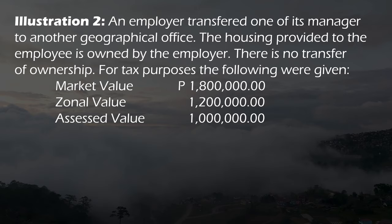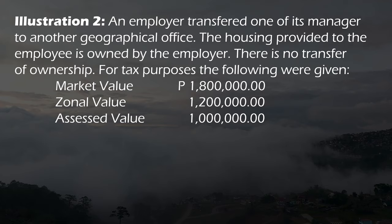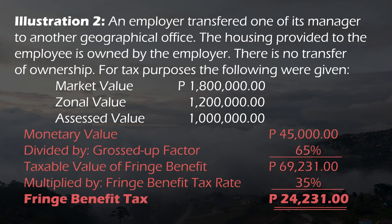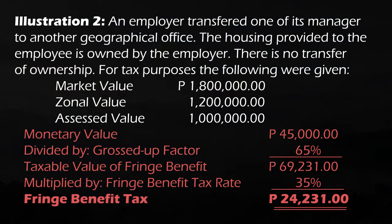For the second illustration, the fringe benefit is housing. For tax purposes, we're given the market value, zonal value, and assessed value. In solving this, we select whichever is higher among the three. To compute the monetary value, we take 1.8 million — the higher of the three — multiply by 5%, then multiply by 50%, giving a monetary value of 45,000. We then divide by the 65% gross-up factor to arrive at the taxable value, and multiply by the fringe benefit tax rate of 35%, giving a fringe benefit tax of 24,231.